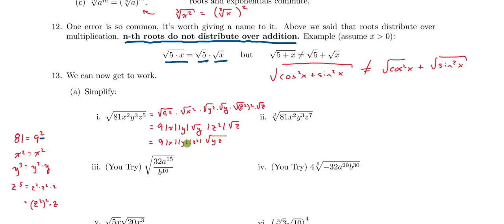Rearranging things, what I have is 9 times |x| times |y| times |z²| times the square root of yz. Now, z squared is always going to be non-negative, so I don't need the absolute value on that expression. So this comes out to be 9|x||y|z times the square root of yz. And now I've simplified that radical.